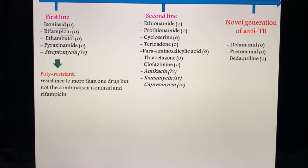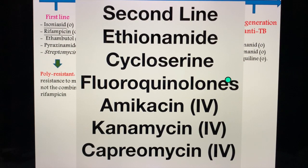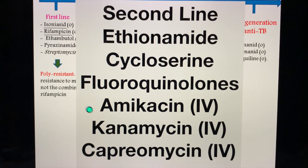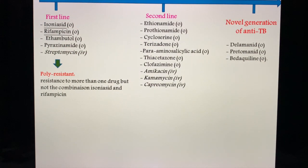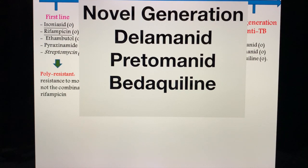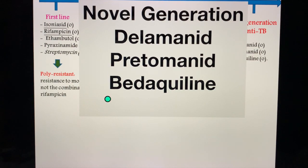The second-line drugs I want you to memorize are: ethionamide, cycloserine, fluoroquinolones, and the aminoglycosides — namely amikacin, kanamycin, and capreomycin. Don't forget the aminoglycosides; they are given intravenously. The novel generation anti-TB drugs are three: delamanid, pretomanid, and bedaquiline.